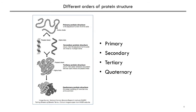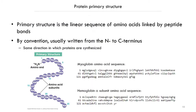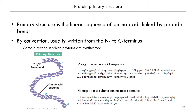Now that we have covered the amino acid building blocks, we'll move on to an overview of protein structure. There are multiple orders of protein structure: primary, secondary, tertiary, and quaternary. The primary structure is simply the linear sequence of amino acids linked by peptide bonds. Conventionally, an amino acid sequence is written from the N-terminus to the C-terminus, which is also the direction in which proteins are synthesized. Shown here as examples are the primary amino acid sequences of myoglobin and the hemoglobin alpha subunit, written with the one-letter code for amino acids.